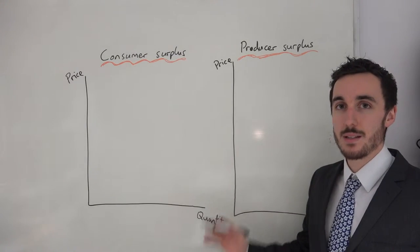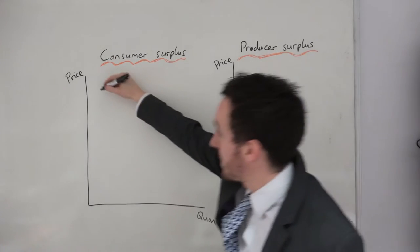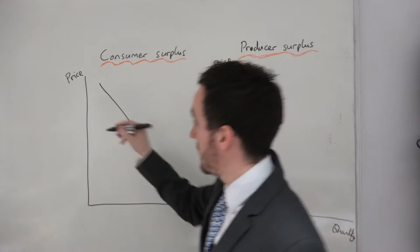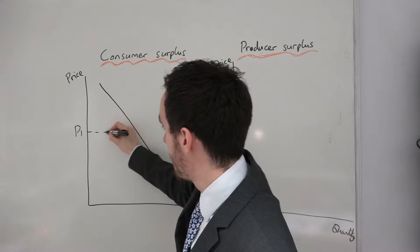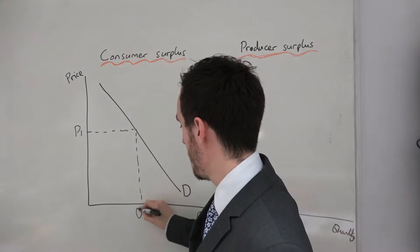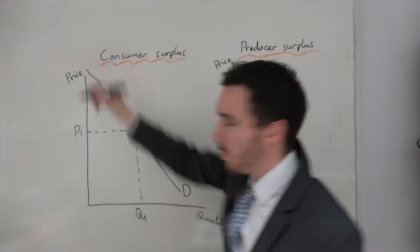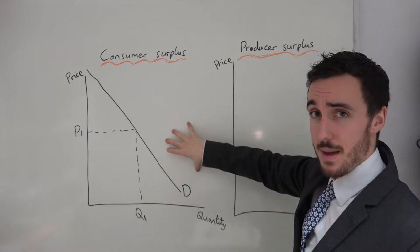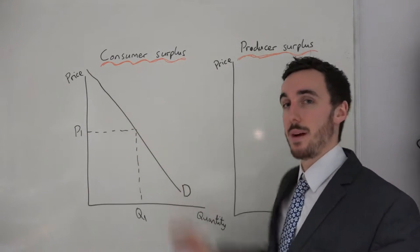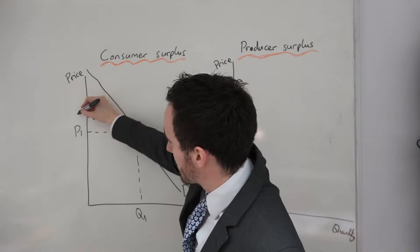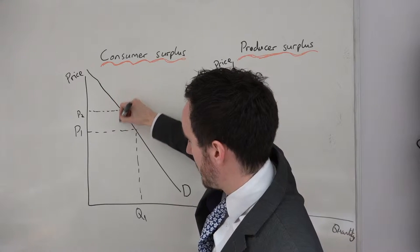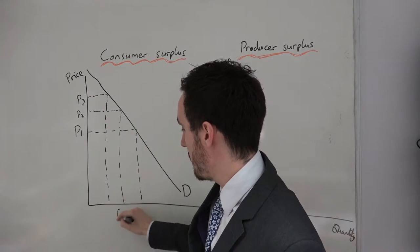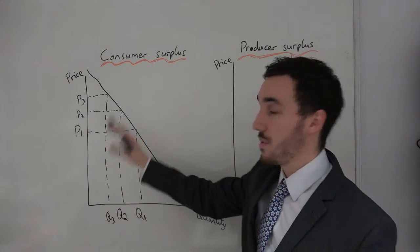The best way to look at this is to draw it on a diagram. So the first thing we need is a downward sloping demand curve. We know the demand curve is downward sloping from our previous videos. So at a price of P1 we have a quantity of Q1. Now we need to look at what some consumers were actually willing to pay. Well, the market demand curve is made up of lots of individual demand curves, so there are some consumers willing to pay P2 and other consumers willing to pay P3.